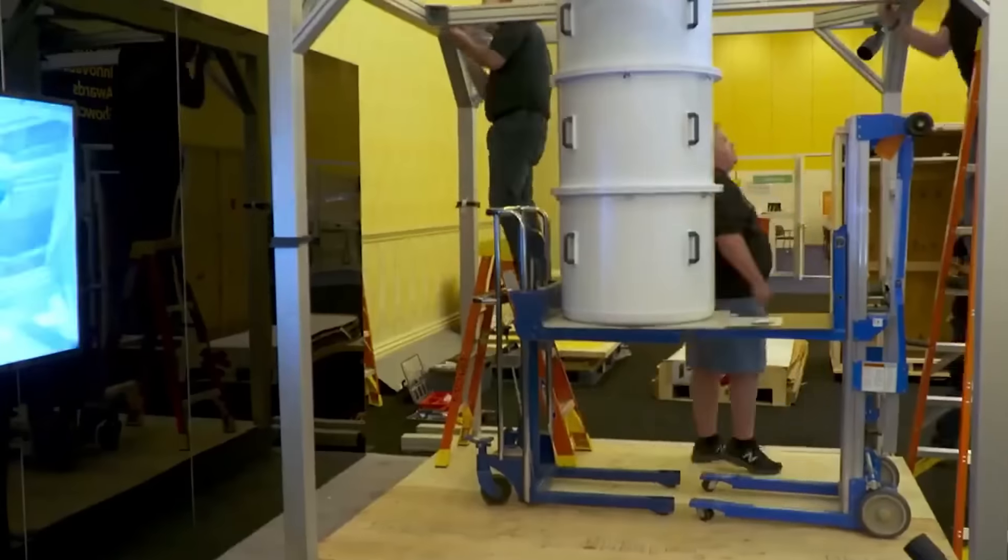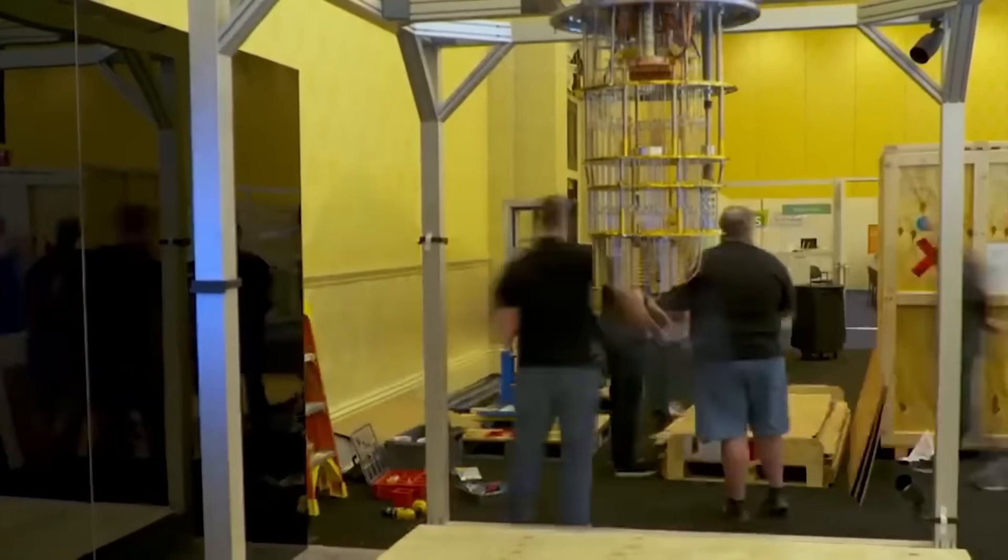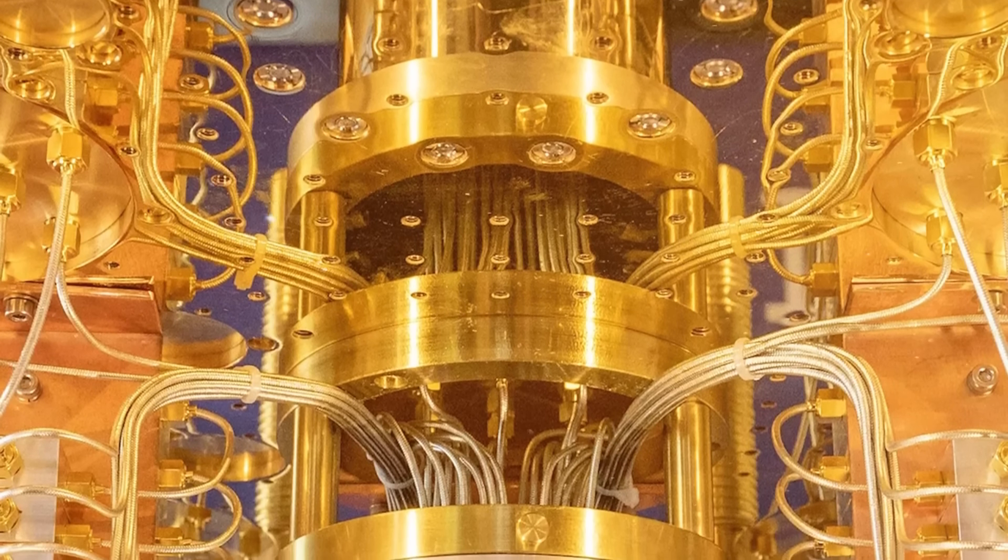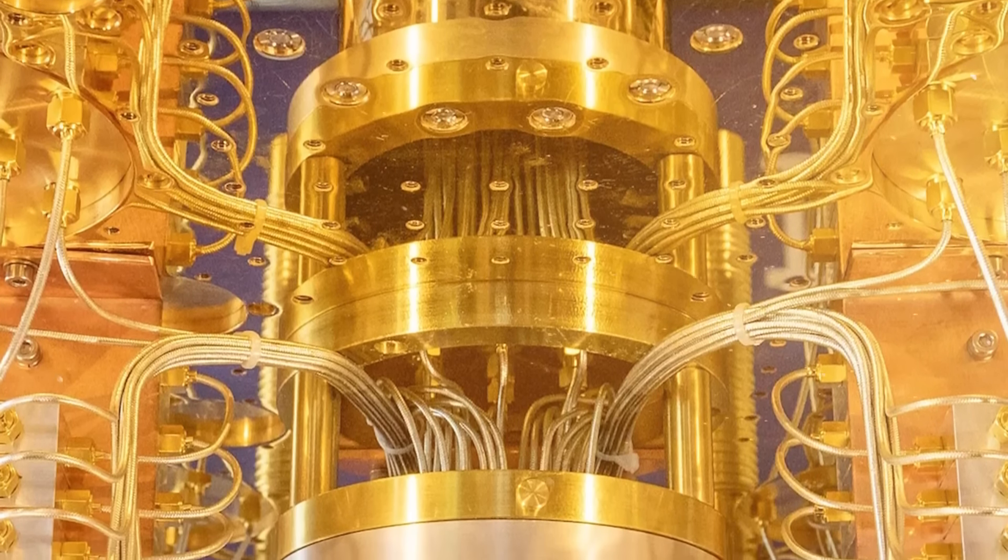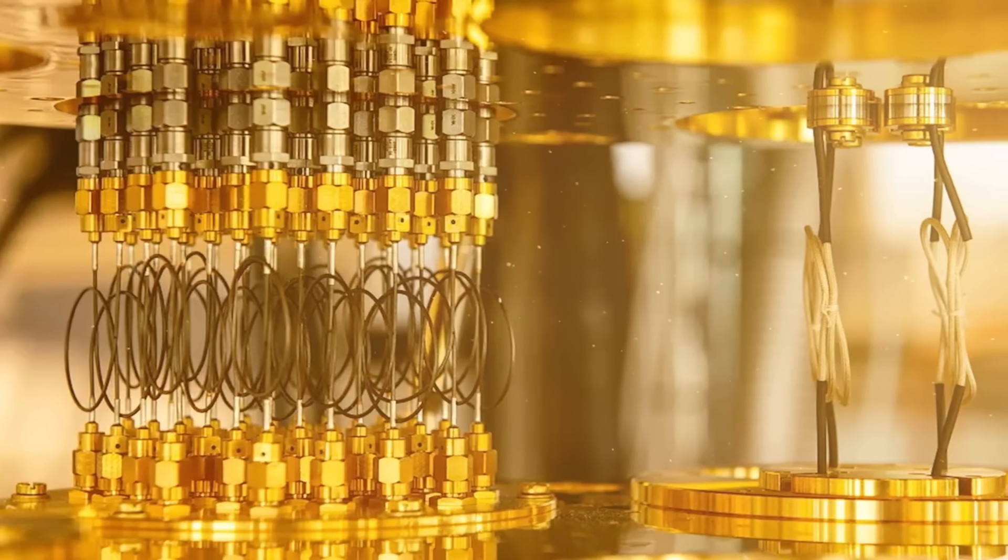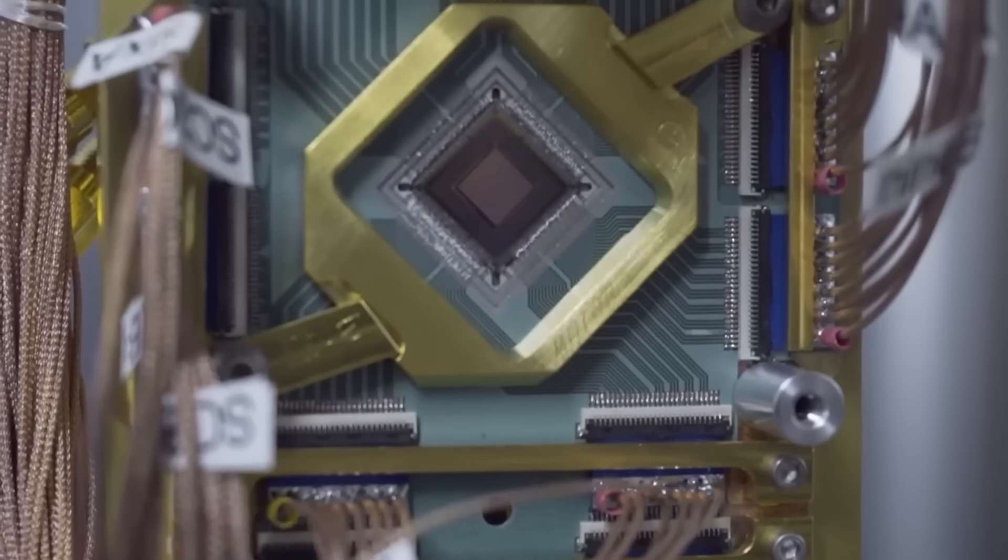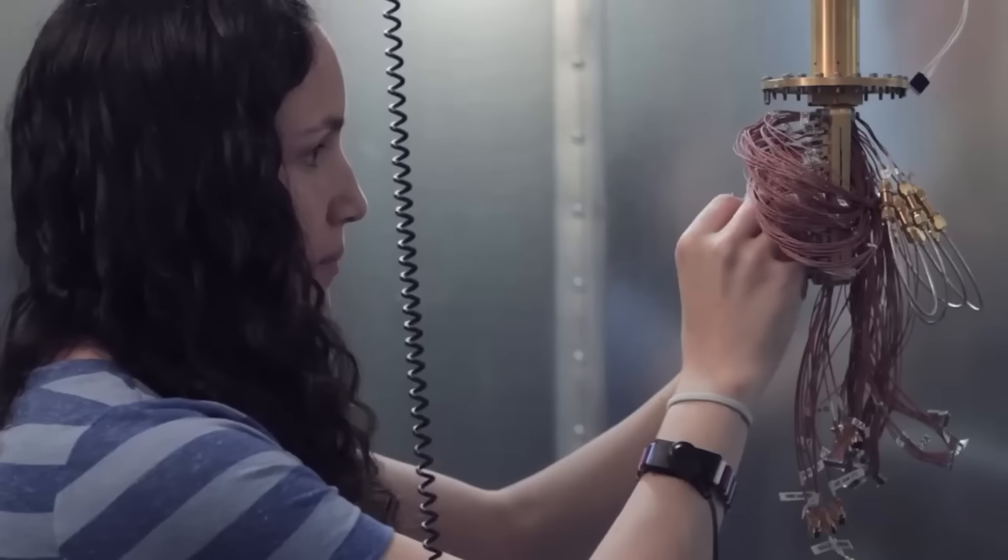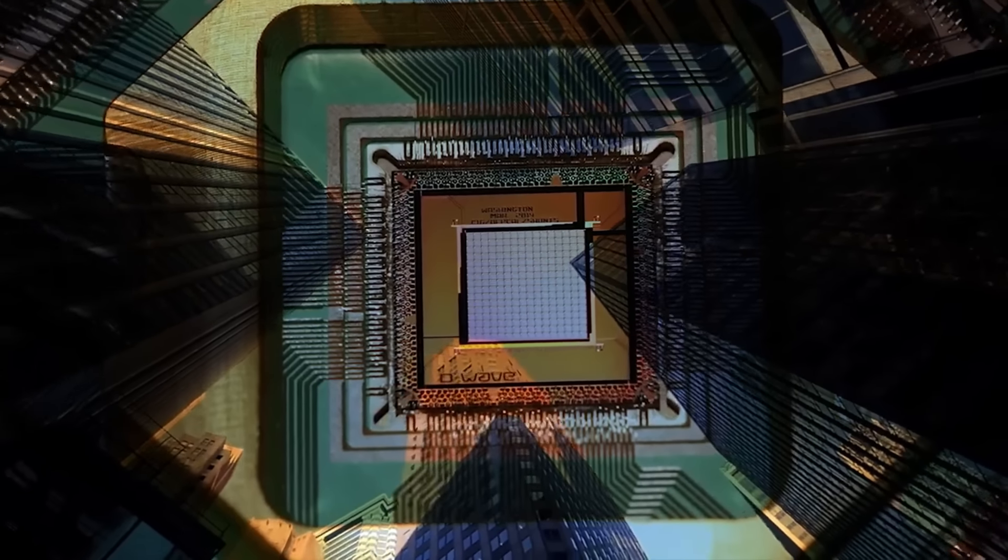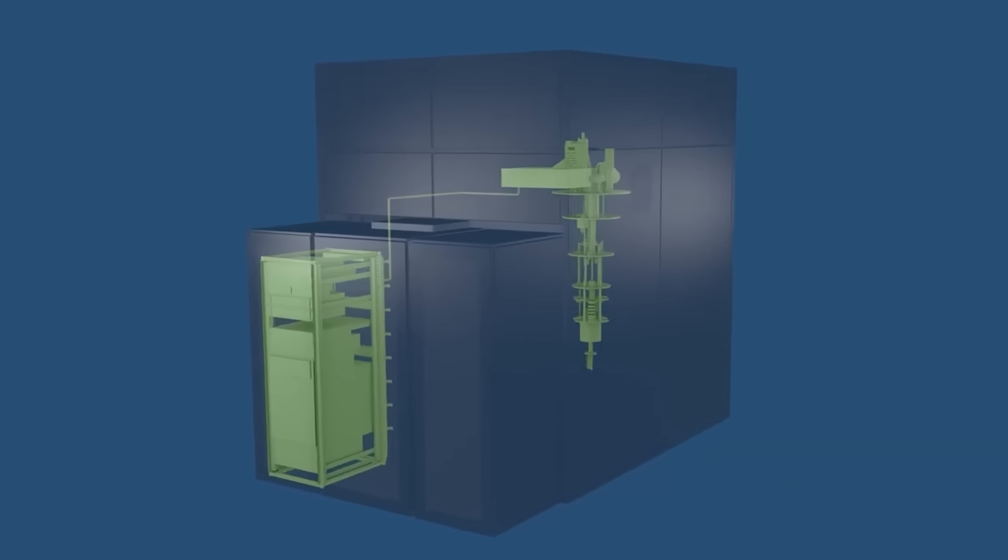But what's truly remarkable is the environment within these dilution refrigerators. The quantum processor, along with its qubits, is suspended in a carefully engineered environment that shields it from external magnetic fields, cosmic rays and even stray photons. This isolation is crucial. It's what allows the quantum processor to preserve the delicate quantum states of the qubits during computation, akin to performing a high-wire act without a safety net, where even the slightest interference could have significant consequences.